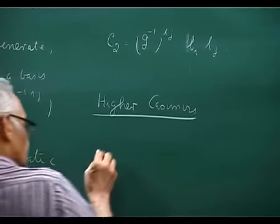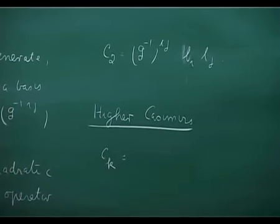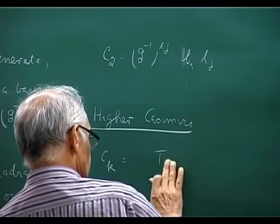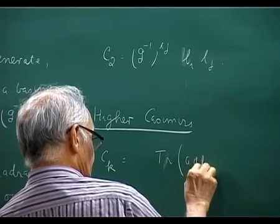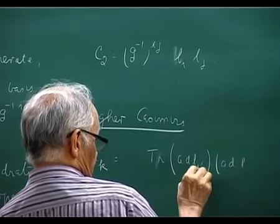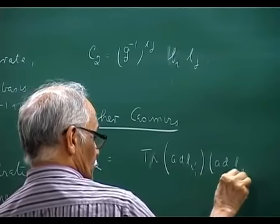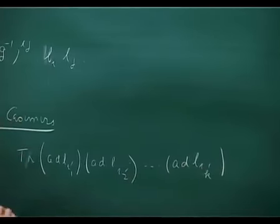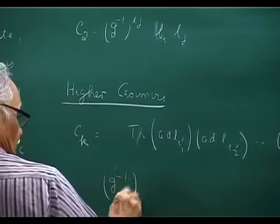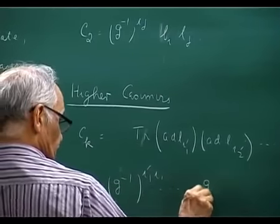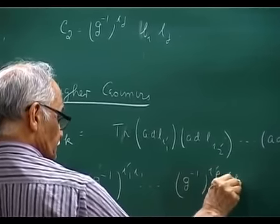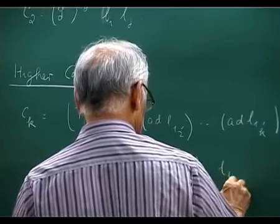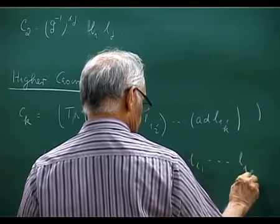What about higher Casimirs? You can write a k-th order Casimir as the following: it is a generalization of this trick. You take trace of ad L_{i'_1}, ad L_{i'_2}, up to ad L_{i'_k}, then multiply by G^{-1 i'_1 i_1}...G^{-1 i'_k i_k} times L_{i_1}...L_{i_k}.